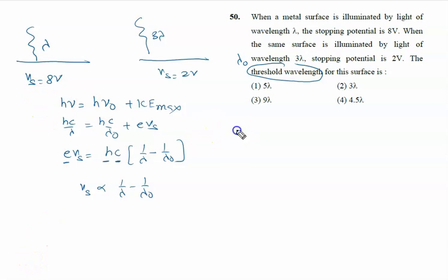In the first situation, 8 is proportional to 1 upon lambda minus 1 upon lambda node. In second situation, 2 is proportional to 1 upon 3 lambda minus 1 upon lambda node.